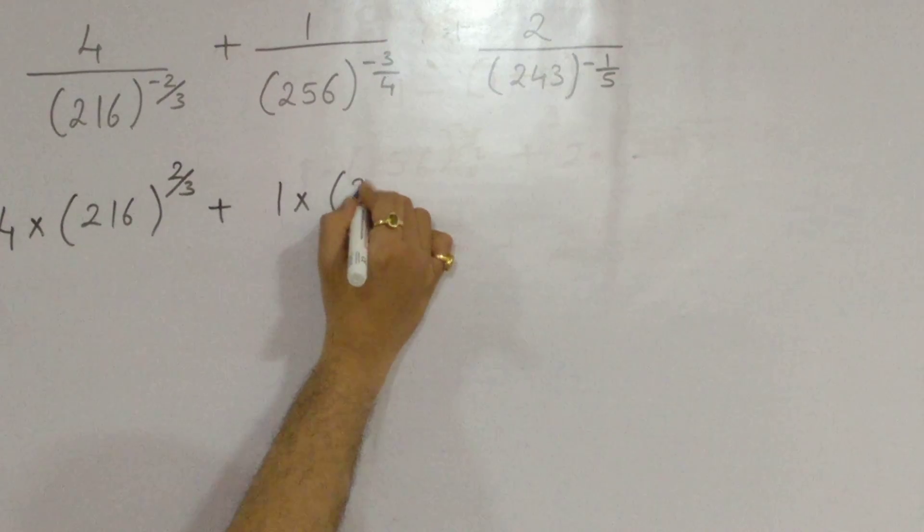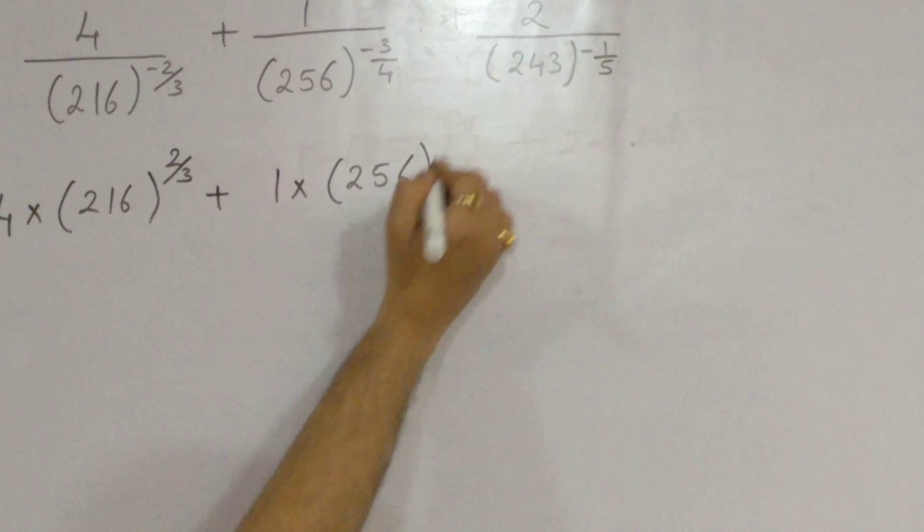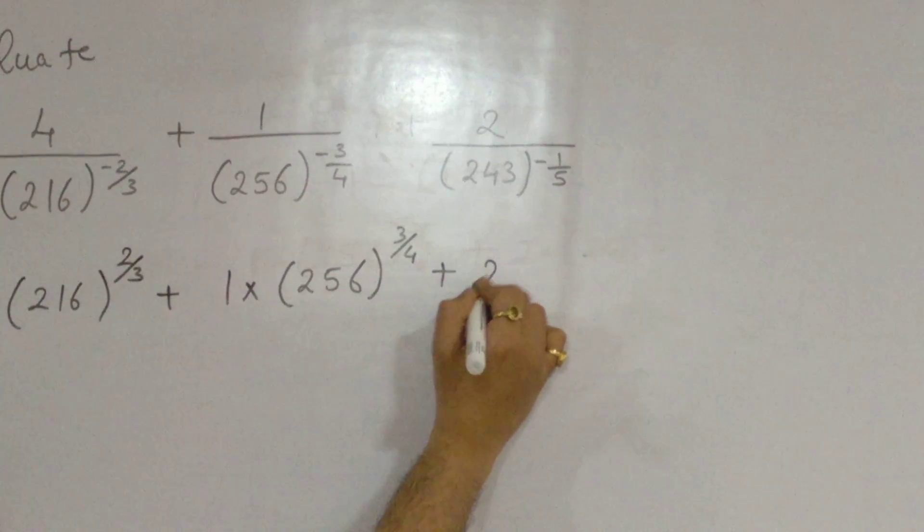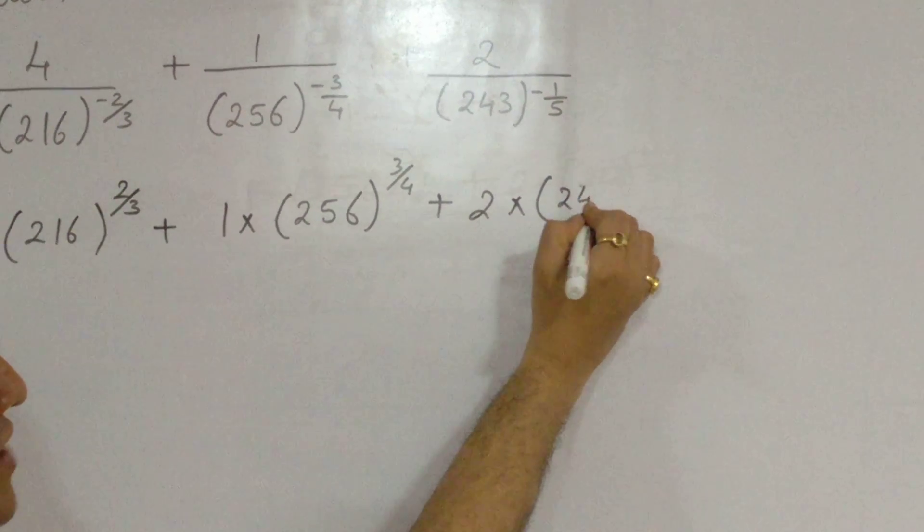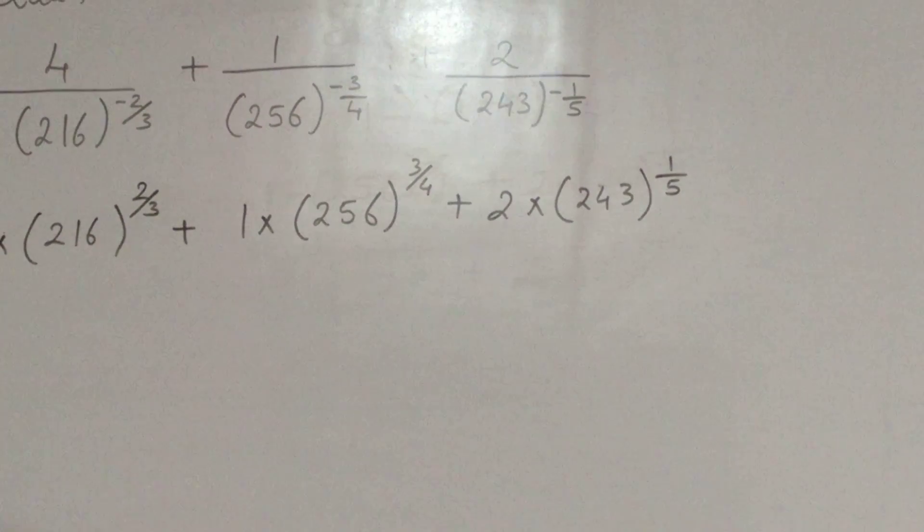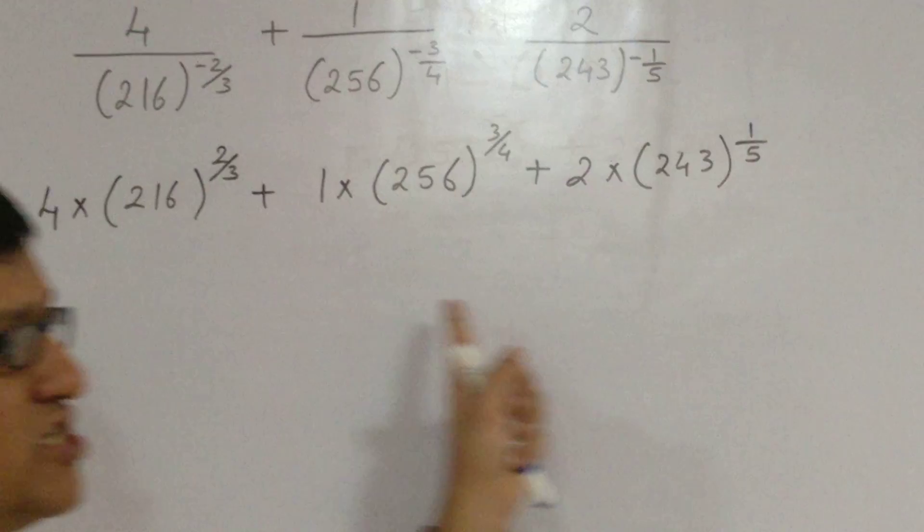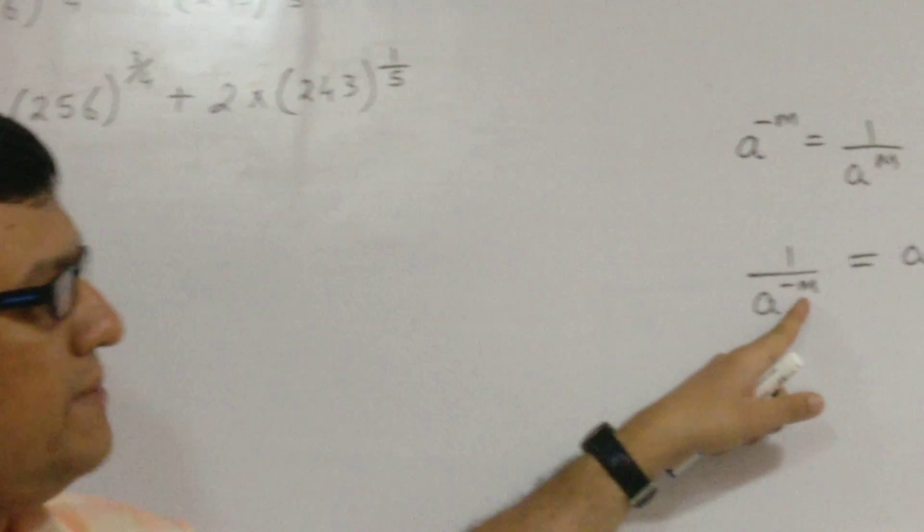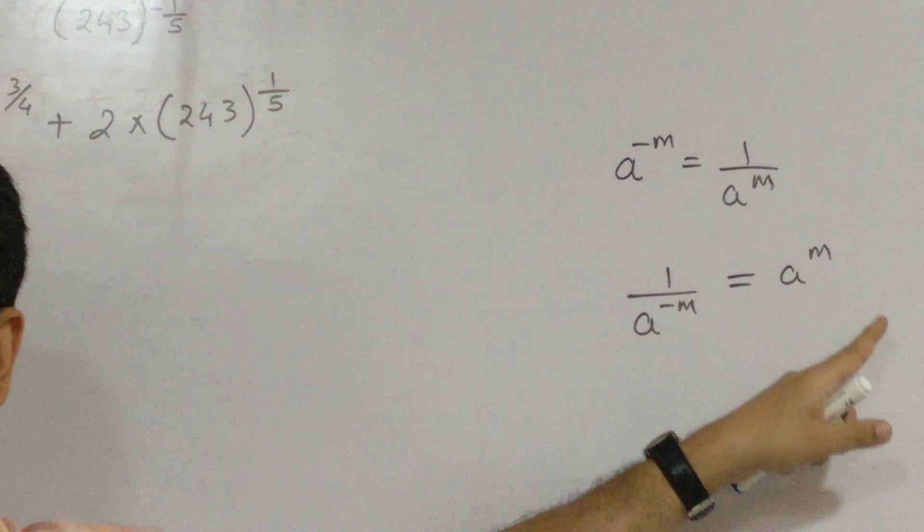The same thing applies for the next few terms also. 1 into 256 to the power 3 by 4 plus 2 into 243 to the power 1 by 5. I hope you have understood which law we have applied. The law which just now we discussed, 1 upon a raised to minus m can always be written as a raised to m.